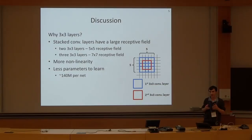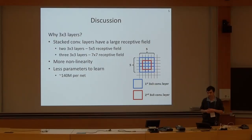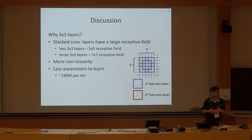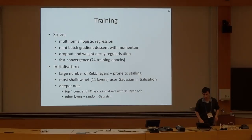What have we gained by using these very small 3x3 convolutional layers? A stack of convolutional layers without any spatial pooling in between can have a large receptive field. For instance, two stacked 3x3 layers give a receptive field of 5x5; adding another gives 7x7, and so on. So we don't lose anything in terms of receptive field size. But by having more convolutional layers, we introduce more nonlinearity into the architecture, and we also have fewer parameters to learn compared to best-performing systems of the past.